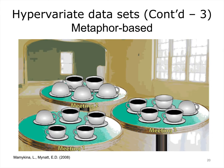Another way to represent multiple properties of data in the same visualization is to use metaphors. Here is an example of planned attendance at meetings represented by schematic tables with coffee cups. Each table represents a meeting. Full cups represent how many individuals of those invited accepted the invitation. Empty cups show individuals who rejected meetings. Upside down cups show individuals who have not responded. This visualization has been shown as promising for individuals of older age and lower education.